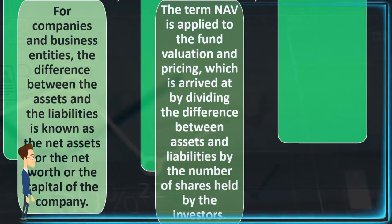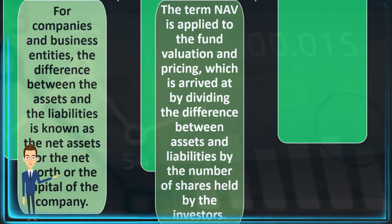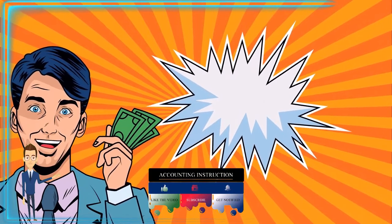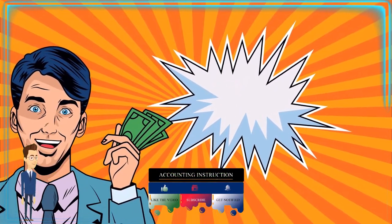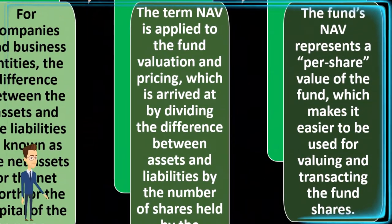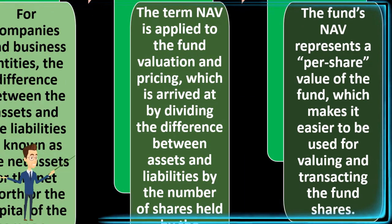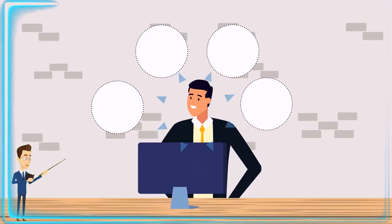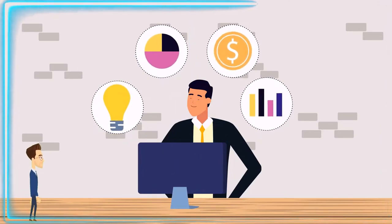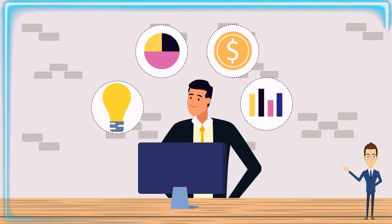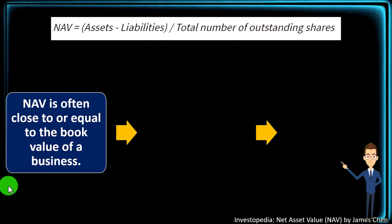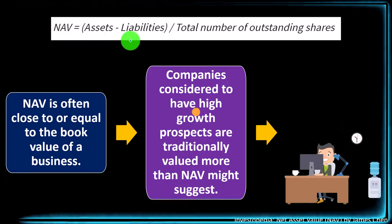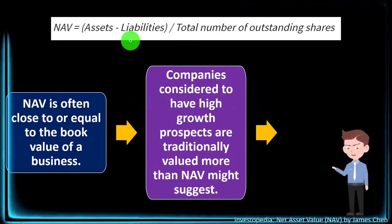The term NAV — net asset value — is applied to fund valuation and pricing, which is arrived at by dividing the difference between assets and liabilities by the number of shares held by the investor. We get a per-share net asset value, which can be thought of as the value on a per-share basis. The fund's NAV represents a price-per-share value of the fund, making it easier to use for valuing and transacting fund shares. The formula is: NAV = (Assets − Liabilities) / Total number of outstanding shares.